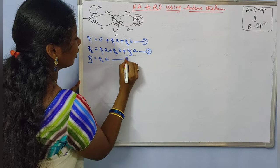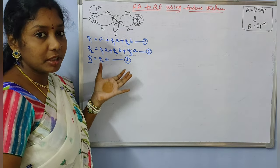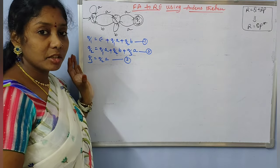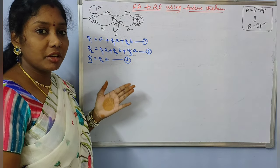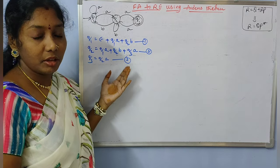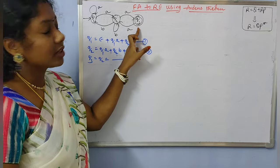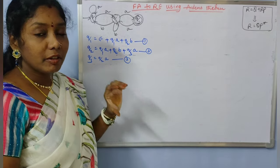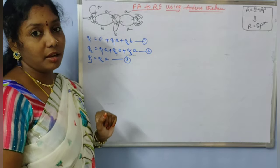Let us say the Q3 equation is equation 3. So we have 3 states and 3 reachability equations. The next task is to substitute one equation into another equation in any order. Finally we need to get the equation for the final state, which is Q3. That equation for Q3 is nothing but the regular expression for the given NFA.